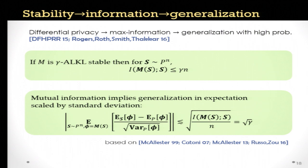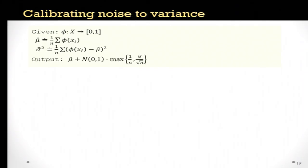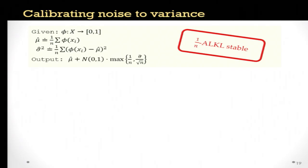The notion allows a natural algorithm called calibrated noise addition. When estimating the mean of some function, instead of adding noise proportional to some fixed accuracy, you add noise proportional to the empirical variance of the value you're trying to estimate — so the noise is roughly on the same scale as the statistical error of the estimator. There is also a second-order correction ensuring the noise is at least one over n. For this algorithm, they prove it is one-over-n average leave-one-out KL stable, whereas its differential privacy guarantees would be on the order of one — much worse.